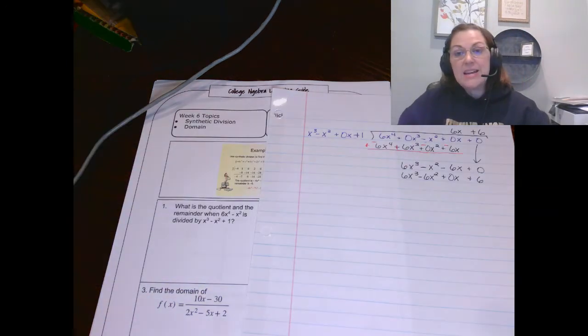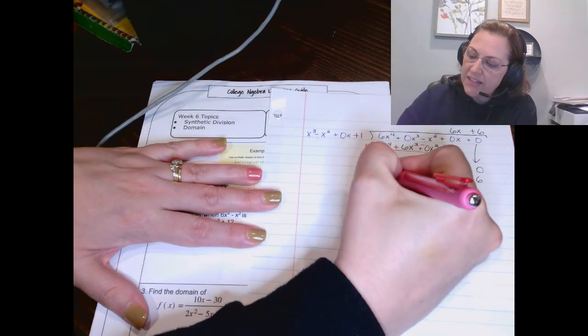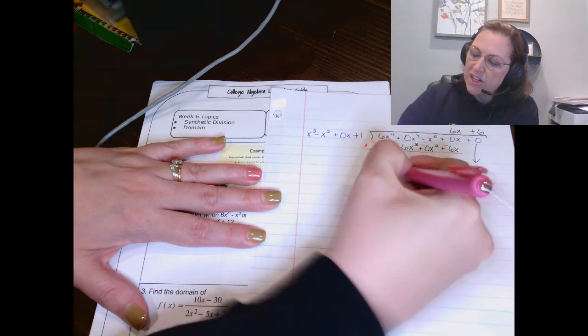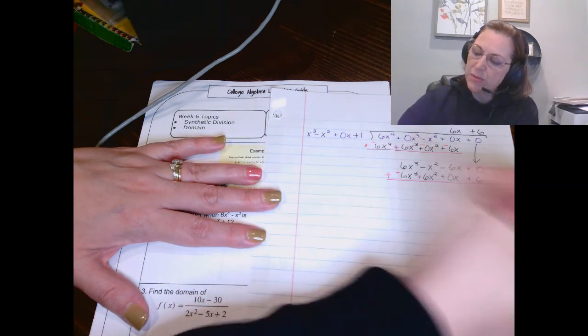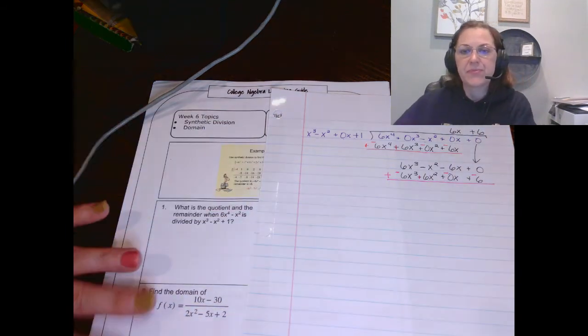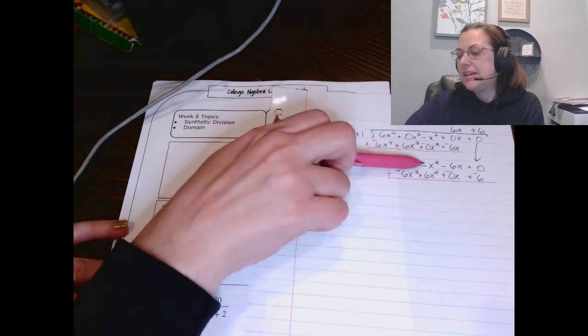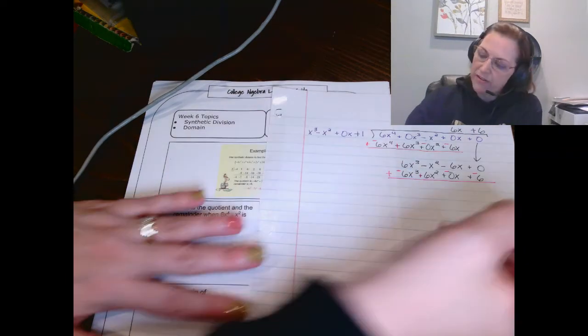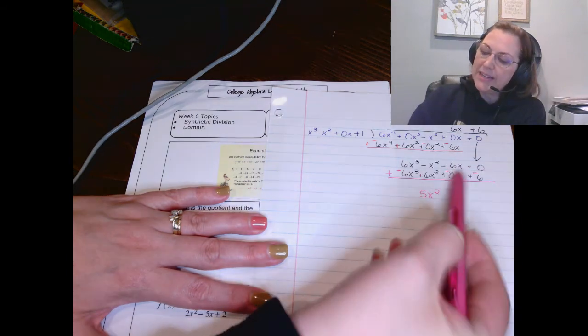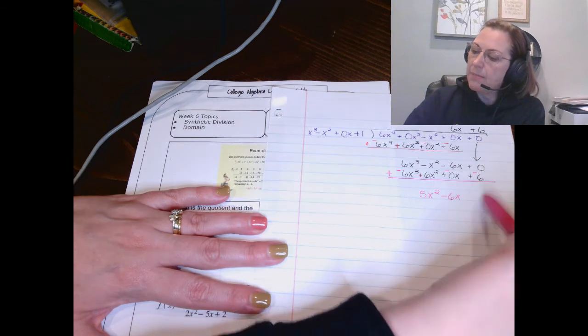Now you normally would subtract. Again, we're going to add and change all the signs here. So I'm changing that to a negative, changing that to a plus, a negative, and a negative. So our first two cancel. Then we get 5X squared minus 6X and minus 6.